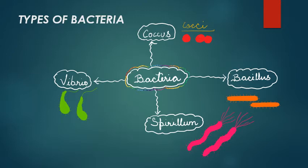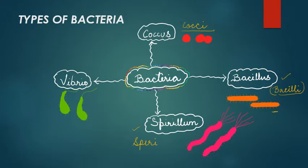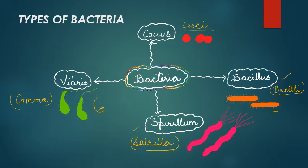Rod shaped bacteria are called bacillus (singular) or bacilli (plural). Bacteria with a spiral shaped body are called spirillum (singular) or spirilla (plural). The fourth category is vibrio bacteria, which have a comma-shaped body — resembling a comma when viewed in a picture.